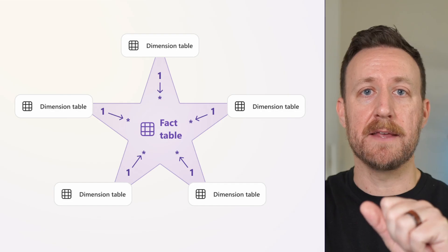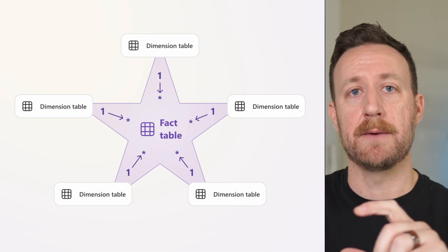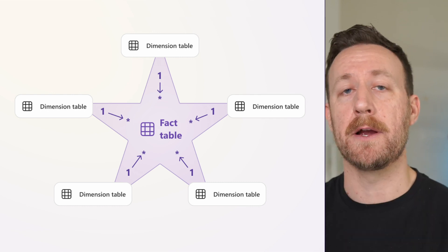Essentially what the star schema is: you have one primary table and you have tables surrounding it that are connected to that primary table with a primary key — a common data field, like a join in SQL. It's super simple, but knowing how to set it up is going to help you get a good start to creating table relationships. Power BI is going to do a lot of this automatically for you, but knowing how to build one is still very important.